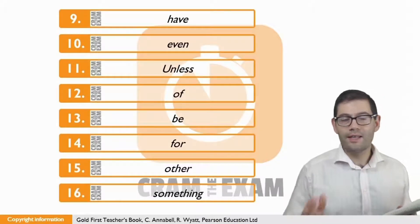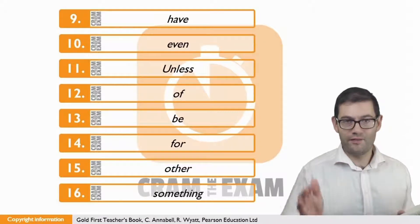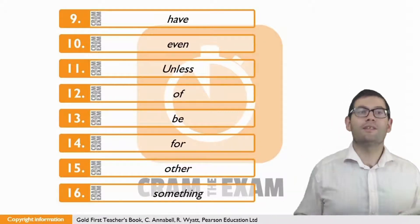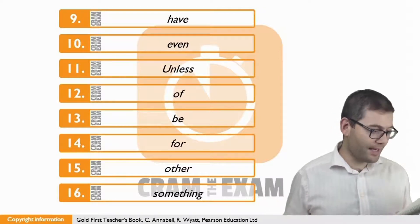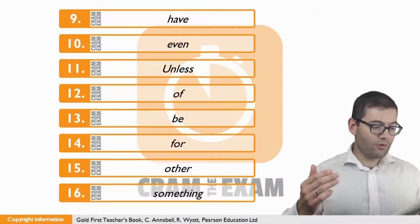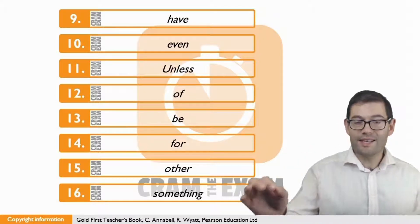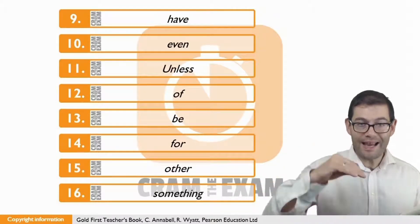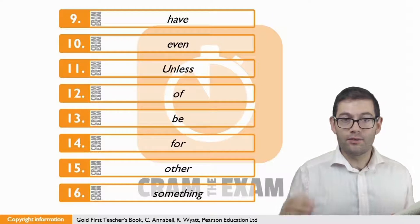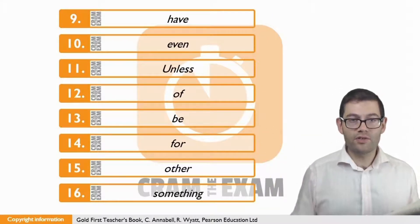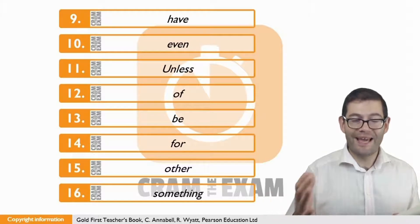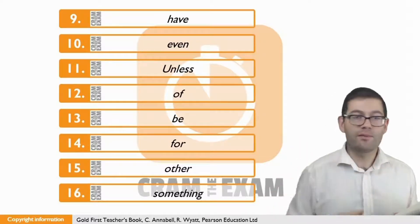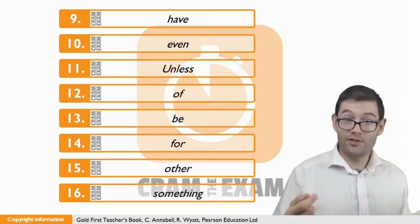For question number nine, this is straightforward, perfect forms. If we have a look at the sentence, we can clearly see that two time periods are being connected together. Knowing what you want to achieve in ten years' time. In other words, it's connecting now until or to ten years in the future. So, if it's a perfect form, we need a form of the verb have somewhere, and that's exactly what we need in this gap, to have achieved.